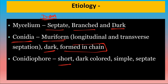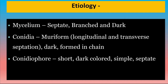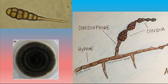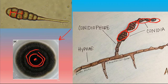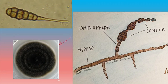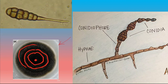Conidiophores are short, dark colored, simple and septate. इसके जो mycelium होते हैं वो septate होते हैं, branched होते हैं और dark color के होते हैं, क्योंकि इनके cell wall में melanin का secretion होता है। इसका जो conidia होता है वो muriform shape का होता है — base वाला portion मोटा होता है और tip पतला होता है। इसमें horizontal और vertical दोनों septa present होते हैं। इनका formation chain में होता है और इनकी colony black color की होती है जिसमें concentric rings बनते हैं।